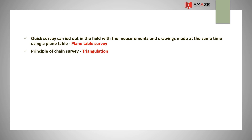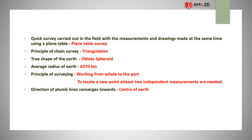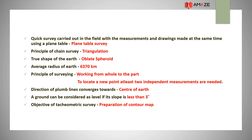The principle of chain survey is triangulation. The true shape of the earth is oblate spheroid and the average radius of the earth is 6,370 km. The principle of surveying is working from whole to part; to locate a new point, at least two independent measures are needed. The direction of a plumb line converges towards the center of the earth. Ground can be considered as level if its slope is less than 3 degrees. The objective of tachymetric survey is preparation of contour maps.